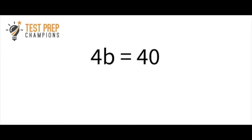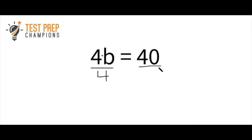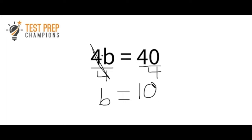The next question: 4b equals 40. Try to solve for b. So 4b is the same as saying 4 times b. The object is always to get the variable by itself on one side of the equation. We need to take the opposite or inverse operation — the reciprocal operation. Since it's 4 times b, the opposite of multiplication is division. We divide by 4 on both sides. 4 divided by 4 equals 1, and 1 times b is just b. So 40 divided by 4 is 10, and b equals 10.